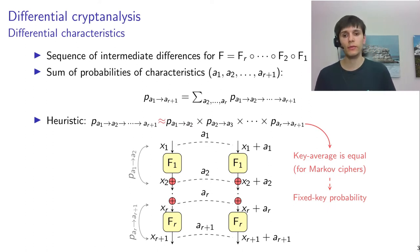That somewhat simplifies things but it doesn't actually tell us how to compute the probability of those characteristics. For that we typically use a heuristic which says that the propagation through f1, f2, and so on can be treated as independent. Now this doesn't actually make sense, but you can make it make some sense by saying that if we add uniform random round keys after each of those functions, then the average probability of the characteristic can be expressed in this way, in an exact way.